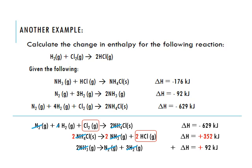Adding up all the change in enthalpy values gives us negative 185 kilojoules — that is our answer for this reaction. Hopefully that helps get you started on these problems. If you need more examples, search YouTube for enthalpy of reaction examples, or check out the Khan Academy video that was posted — take a look at that if you're stuck.